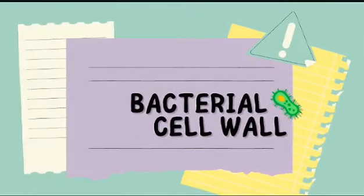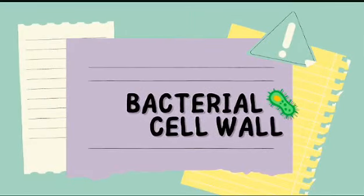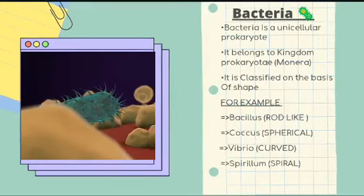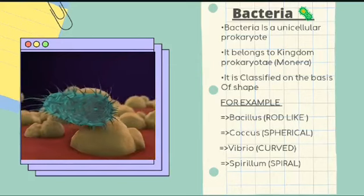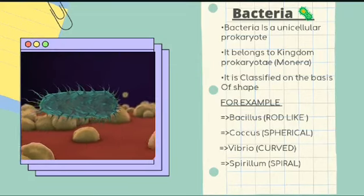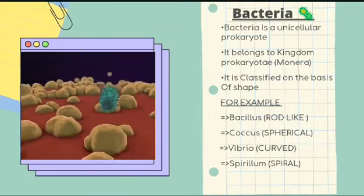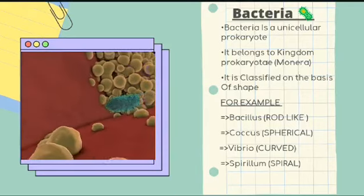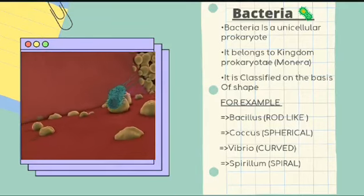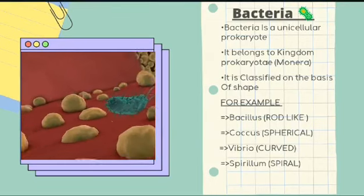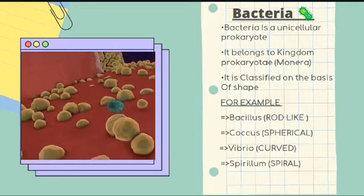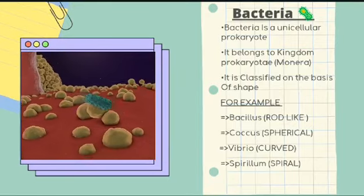Hello everyone, today we will learn about the bacterial cell wall. Before describing the cell wall, it is mandatory to describe bacteria first. Bacteria is a small unicellular prokaryotic organism which belongs to the kingdom Prokaryota, also known as kingdom Monera. It is classified on the basis of its shape, and it is basically obtained in four types of shapes.